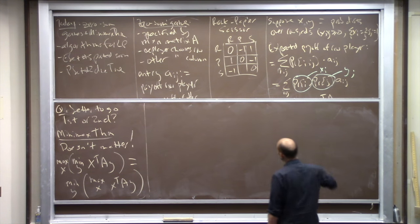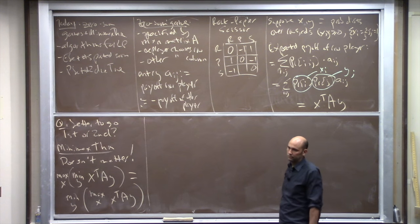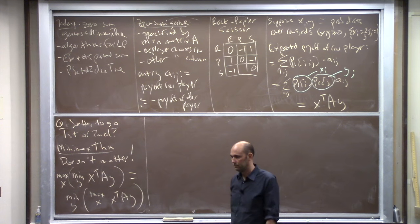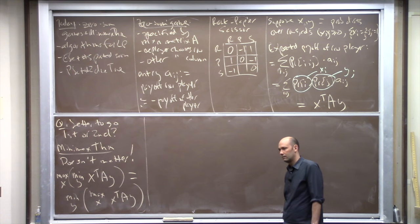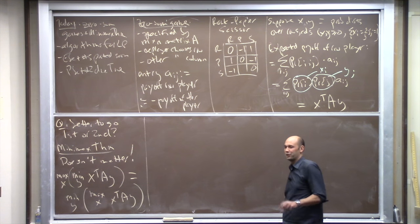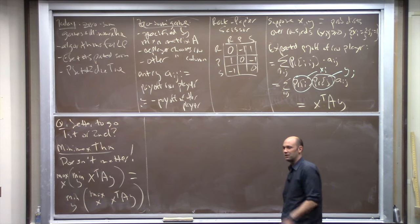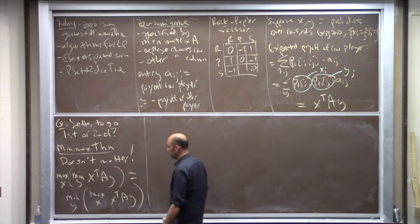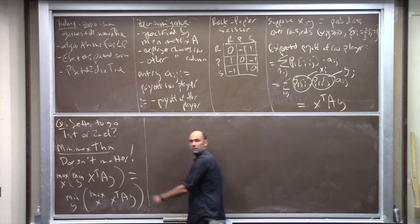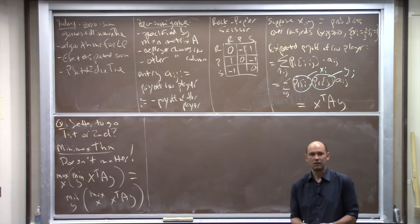Think of it like each player writes a computer program that flips random coins inside. The row player has to submit their code first, the column player inspects it and then submits their own code, and then we run both randomized algorithms and see what happens. We argued that going first can only hurt you, so we'd expect the row-player-first quantity to be at most the column-player-first quantity — but in fact they're equal. And spoiler alert: this just follows from strong linear programming duality.